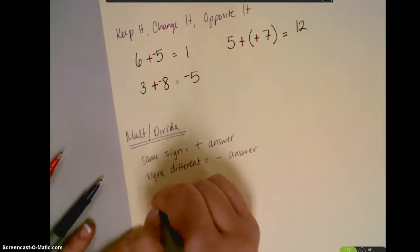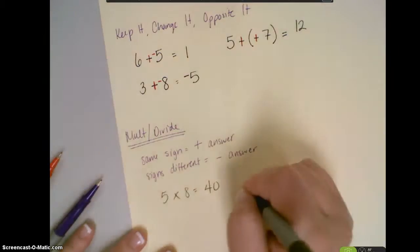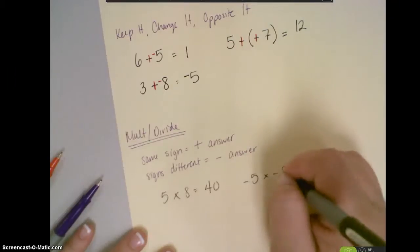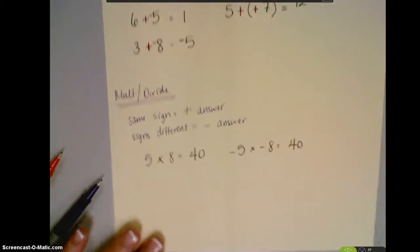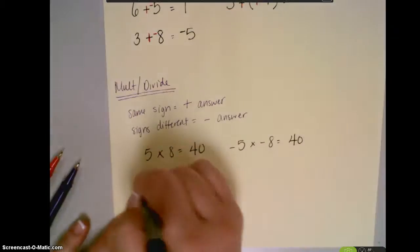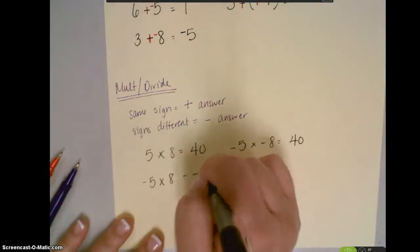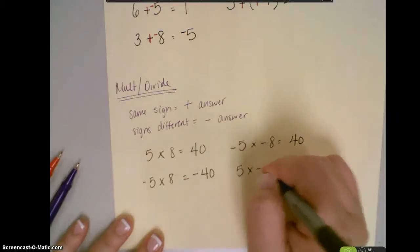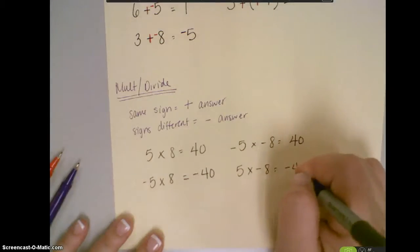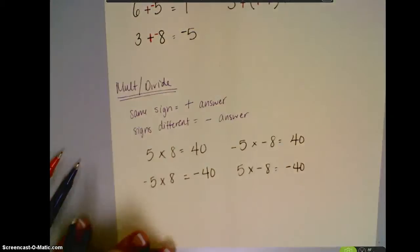So, if I have 5 times 8, that's going to be 40. If I have negative 5 times negative 8, that's also going to be 40. If I have negative 5 times positive 8, that would be negative 40. And if I have 5 times negative 8, that would be negative 40. So, same signs give a positive answer, different signs give a negative answer.